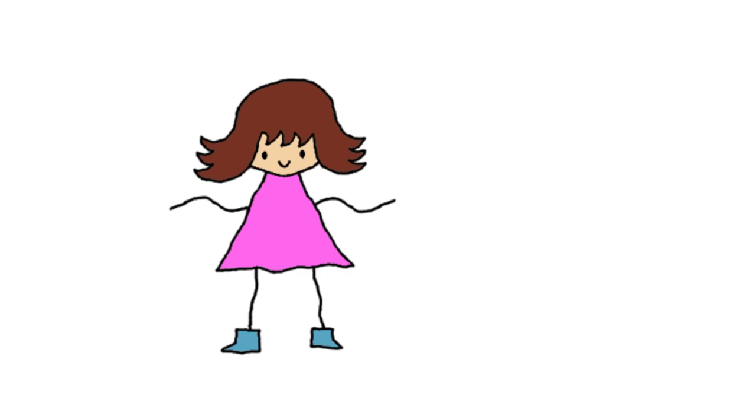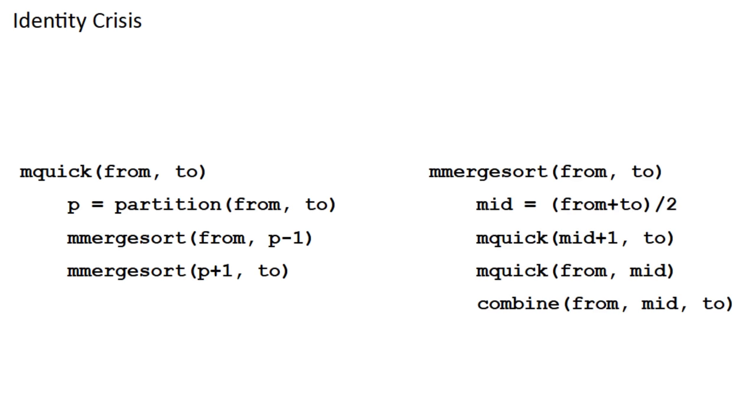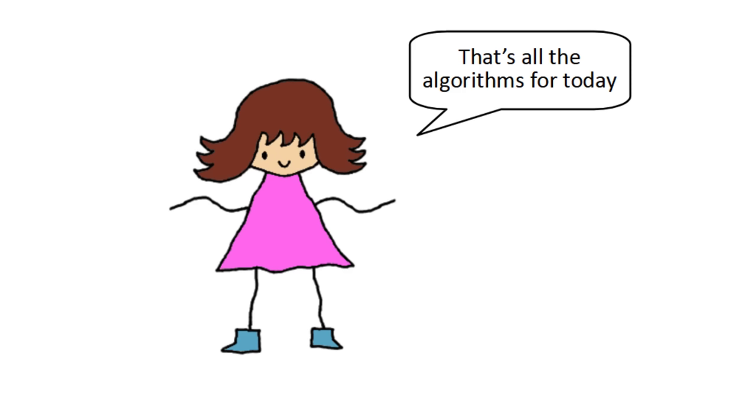All these joke sorting algorithms inspired me to come up with my own, which I'm going to call identity crisis sort. It starts with a modified quicksort, which does a partition, but instead of sorting each sublist recursively, it sorts them with a modified merge sort. This modified merge sort sorts the right half first, then the left half, both using the modified quicksort, and then combines them. This makes for an algorithm that looks ridiculous, but is still n log n. And those are all the algorithms I have for today.